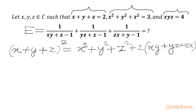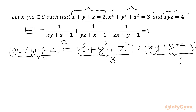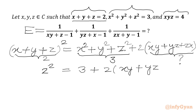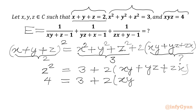Now x plus y plus z is 2, so here we can write 2. x squared plus y squared plus z squared is 3. Here we will find the value of xy plus yz plus zx. So I will write 2 squared on the LHS. On the RHS, 3 plus 2 times xy plus yz plus zx. Now 2 squared equals 4, equal to 3 plus 2 times xy plus yz plus zx.